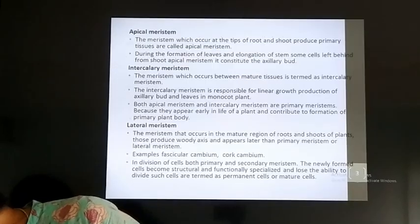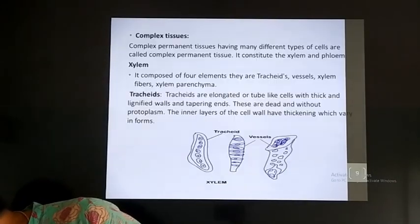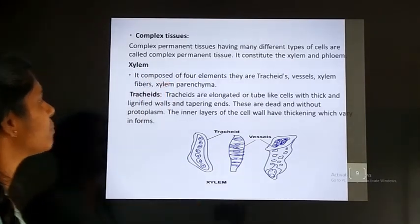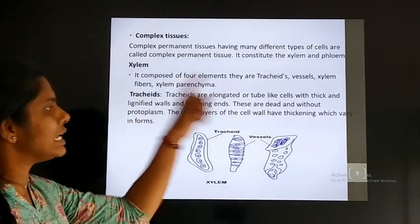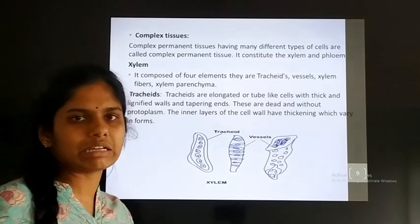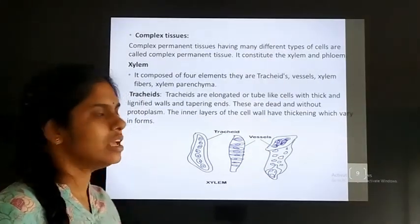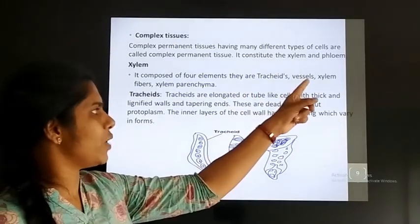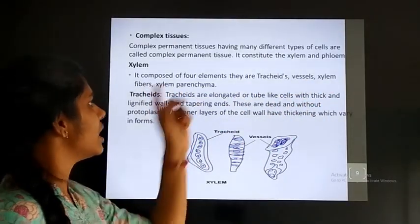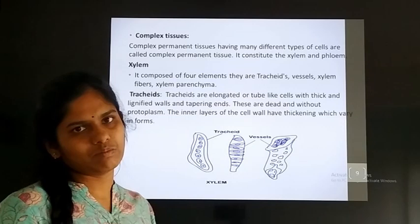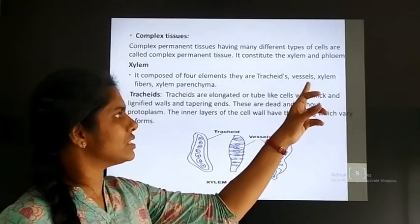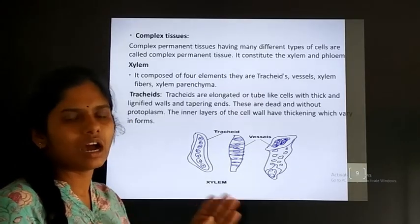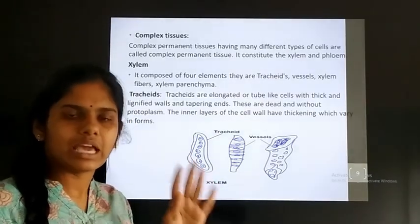This is the structure of xylem. Xylem is one of the most important permanent tissues. It mainly consists of four xylary elements: tracheids, vessels, xylem fibers, and xylem parenchyma. These are the four xylary elements.